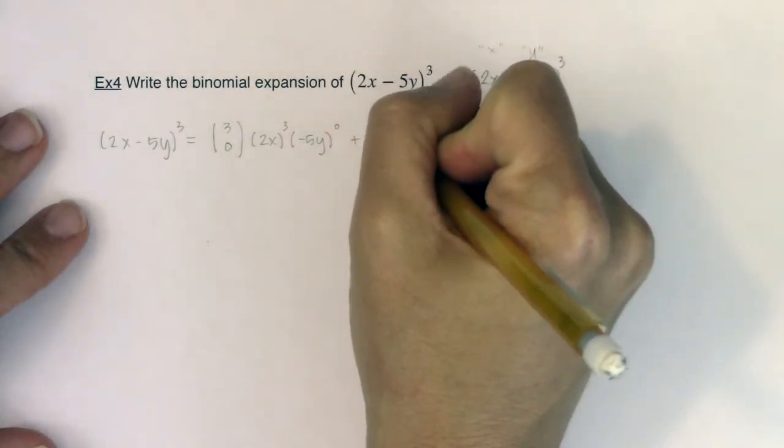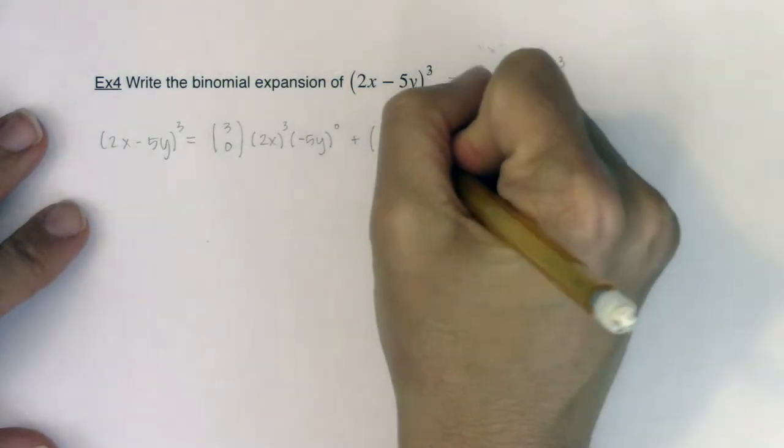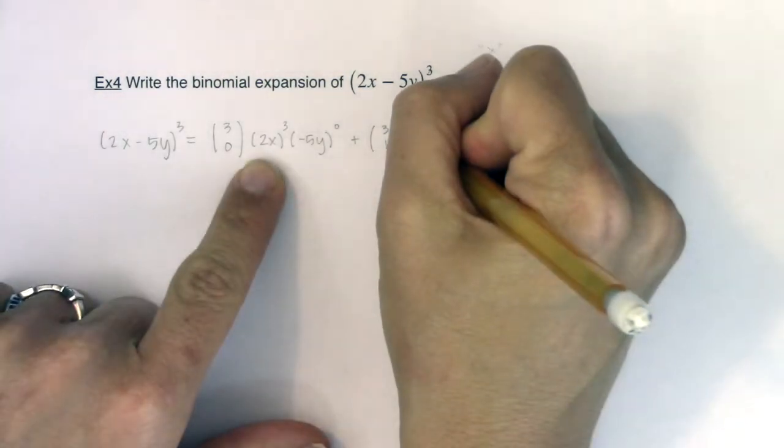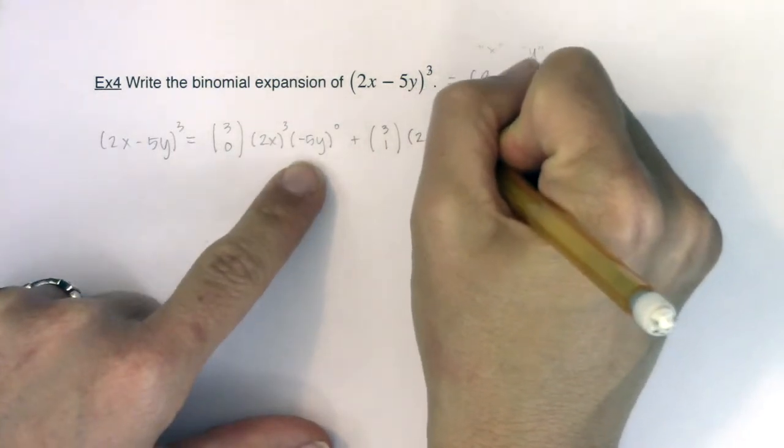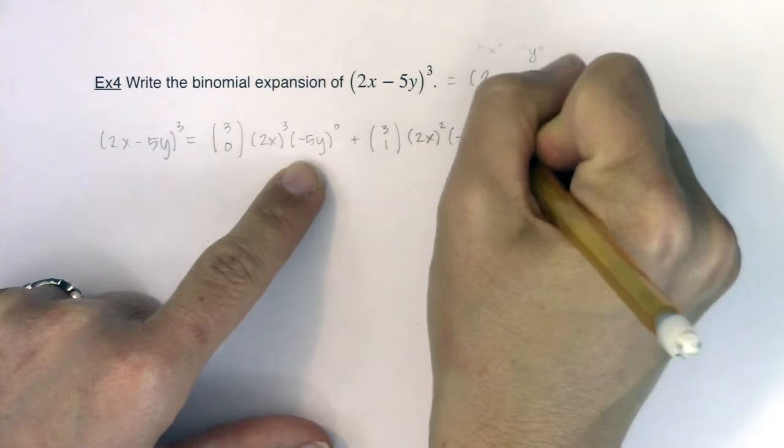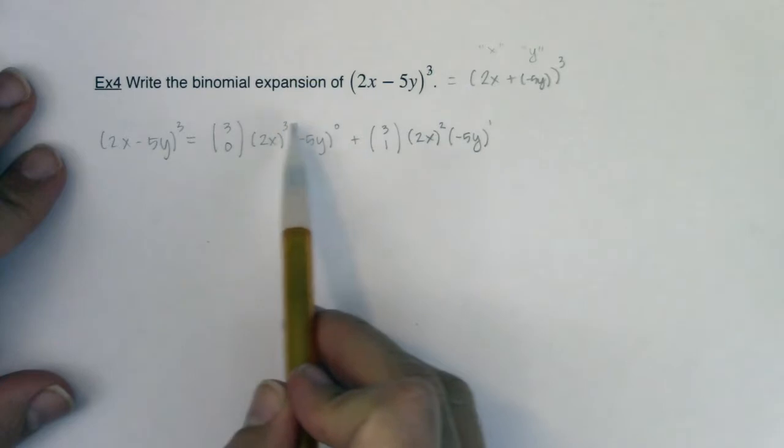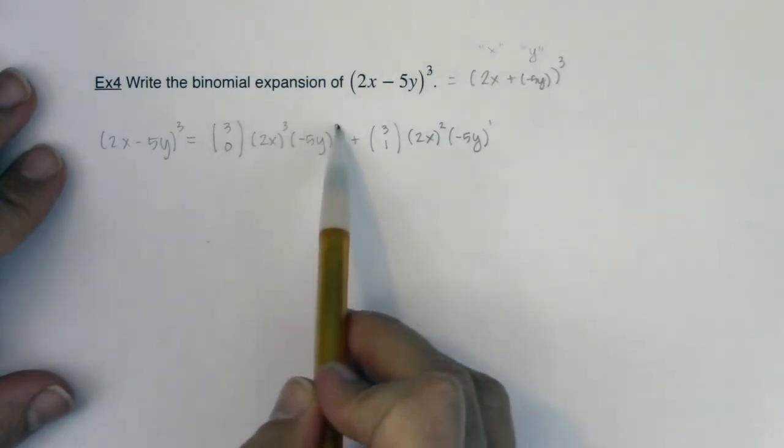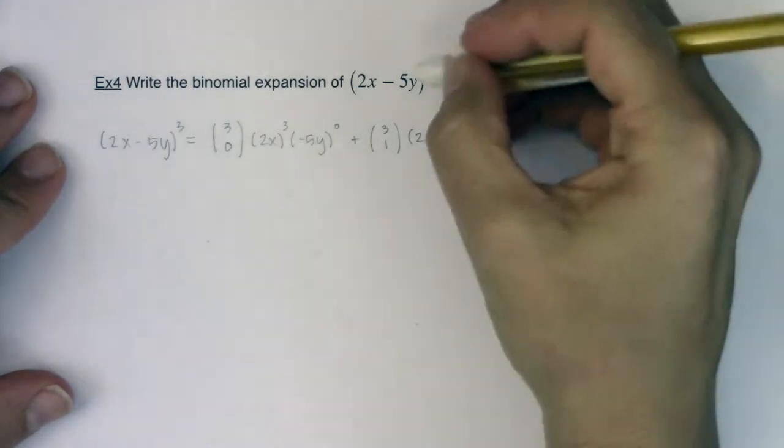We're going to add to that our next term. Our binomial coefficient is 3 choose 1. Now the powers of 2x will descend, so we will have 2x squared, and the powers of negative 5y will ascend, and we will get negative 5y raised to the first. Now take note that these exponents are adding to 3. 3 plus 0 is 3, 2 plus 1 is 3, and it should always match that exponent here.